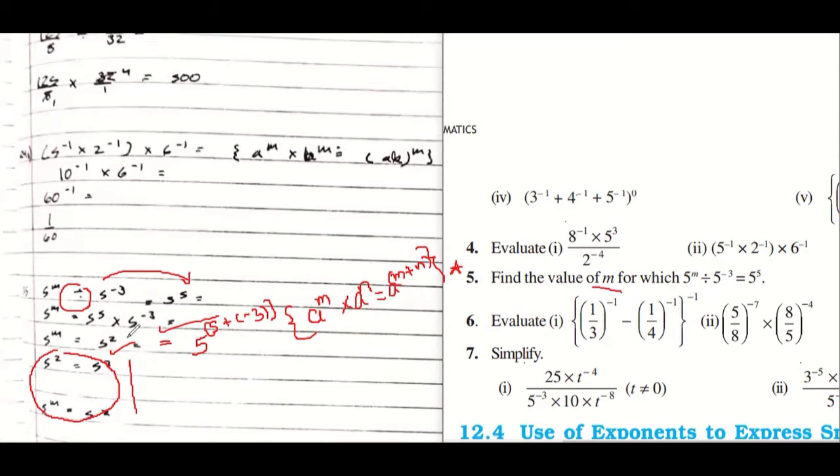No sir, so five power m equals five to the power of two. So that means that m equals to the power of two. Okay, I'll discuss. So now what is your answer for this?